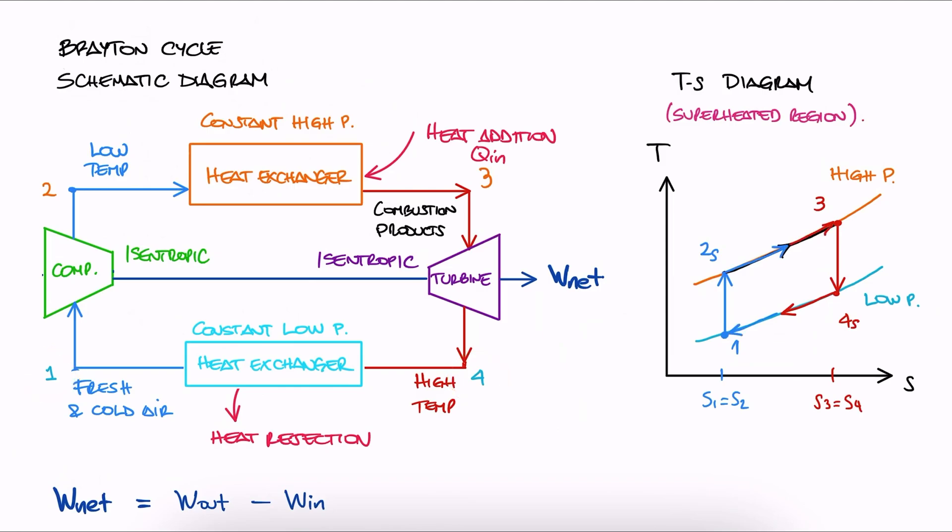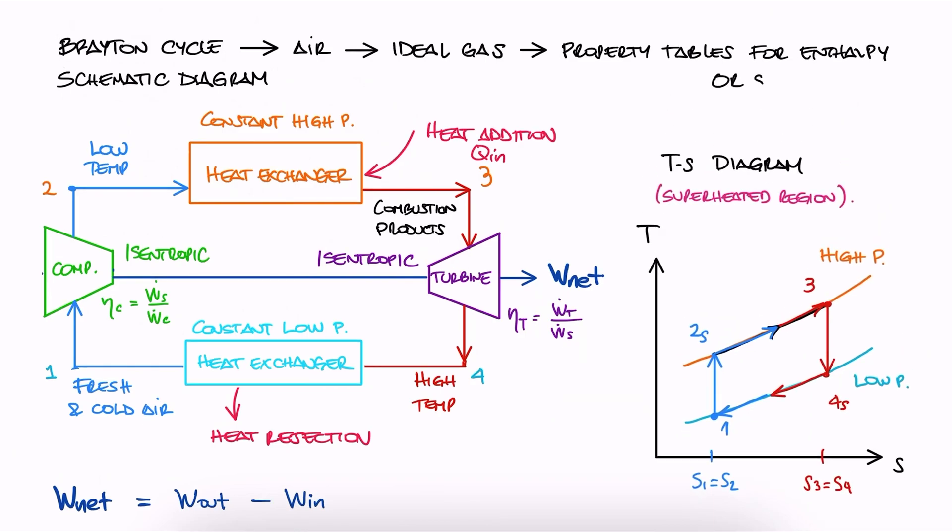We already know how to analyze all of these stages. We have all the tools for even calculating efficiencies. We can use the ideal gas law, and if we have pressures and temperatures, we also have tables to find enthalpies, or even use specific heats, constant or variable, to calculate those enthalpy values without the property tables.